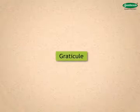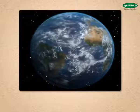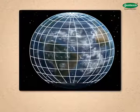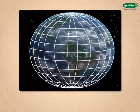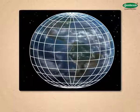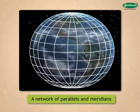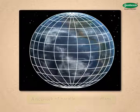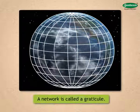You must be familiar with the globe. There are many vertical and horizontal lines on it — these lines are actually a network of parallels and meridians. This network is called a graticule.